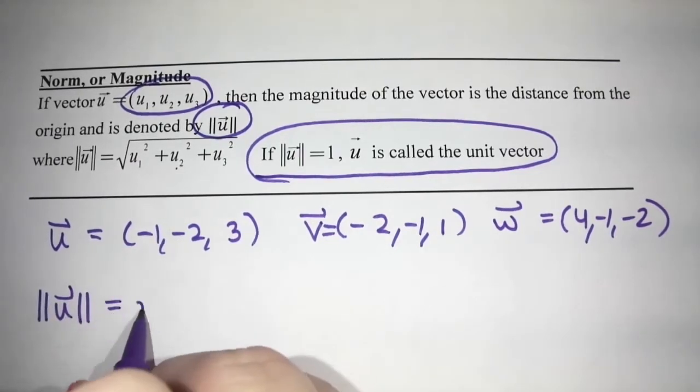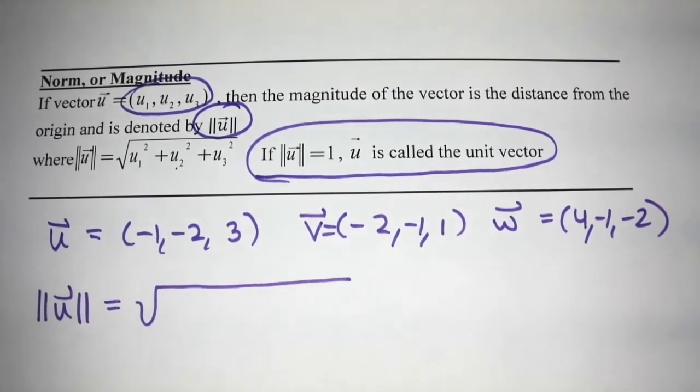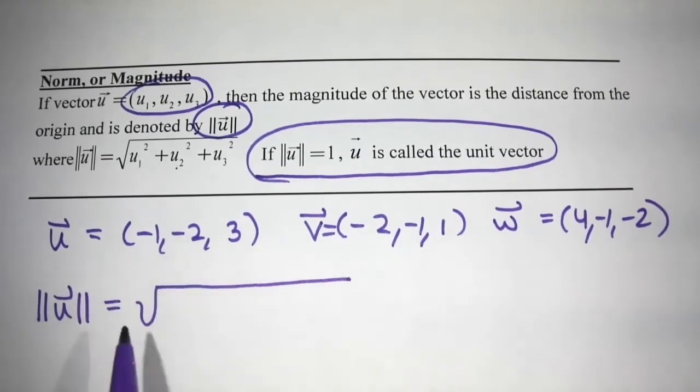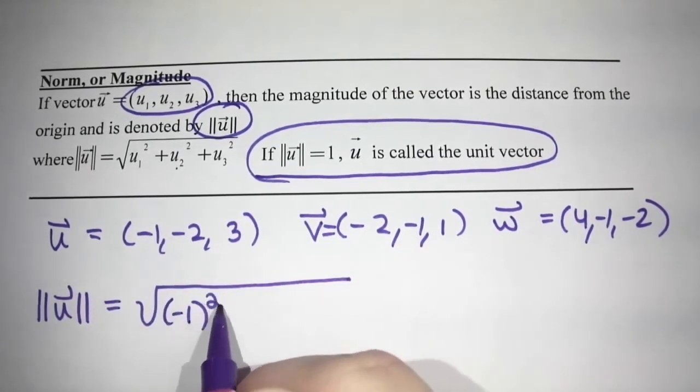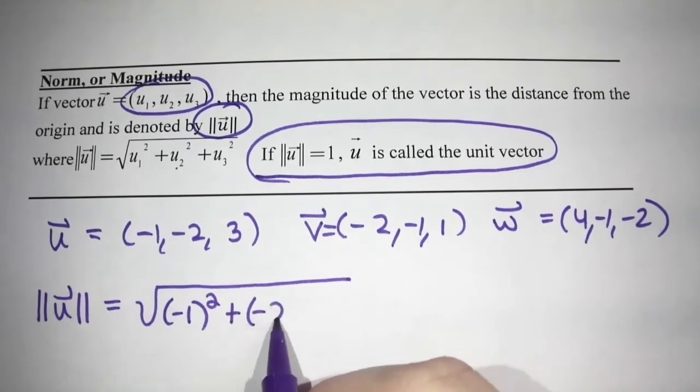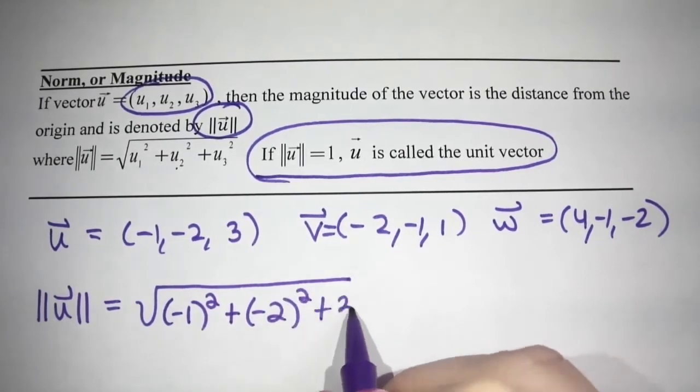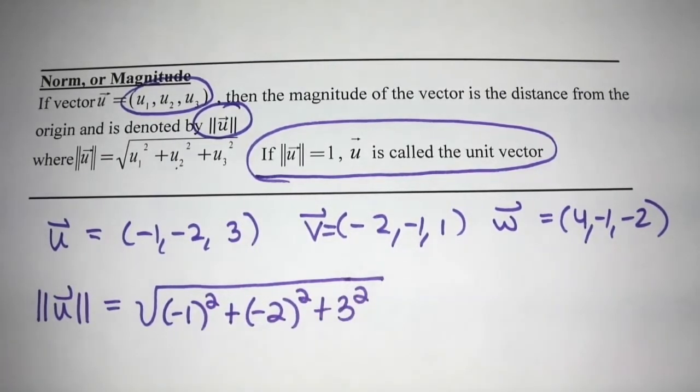And so the first thing we're going to talk about is just calculating the magnitude of these vectors. So the magnitude of U, for example, would be square root. Square each of these components and add them up.